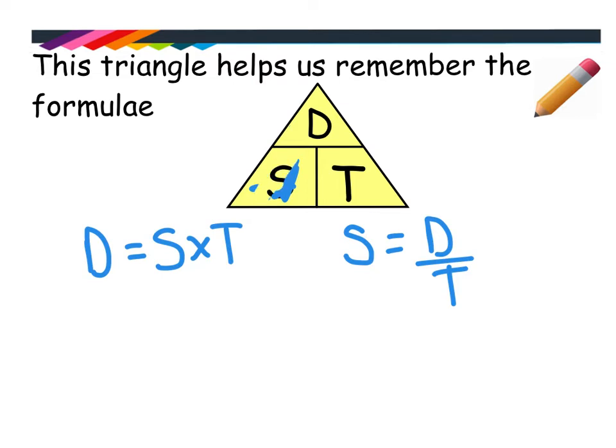And then finally, if I wanted to do a time calculation, I would cover up time, and that is left with D over S, which is your distance divided by speed. So it's a really handy triangle. You just have to remember that and write that down for every question, and it'll help you decide what calculation you're performing.